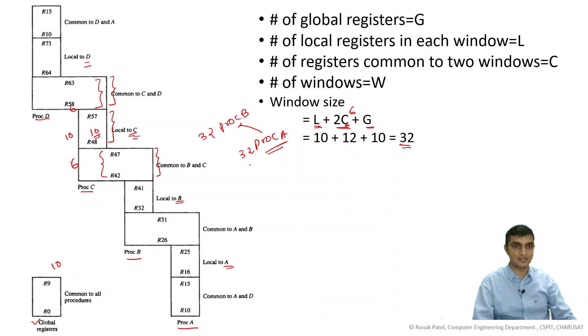And this is also 32. In this, 10 global are common - 10 global this can also access. And the 6 registers that is adjacent between process A and B - A and B, this 6 registers. So whenever A wants to pass some parameters to B, then they can use these 6 registers for this.